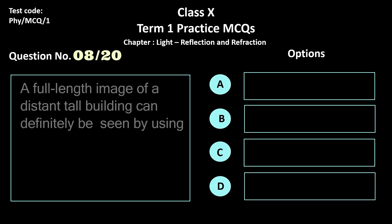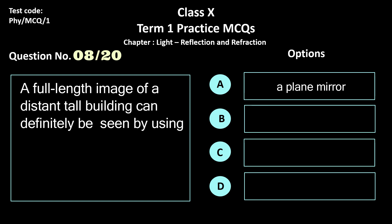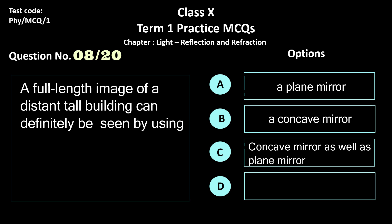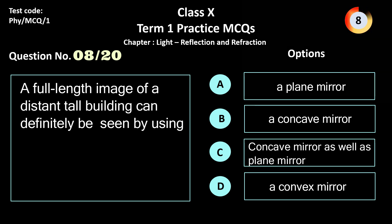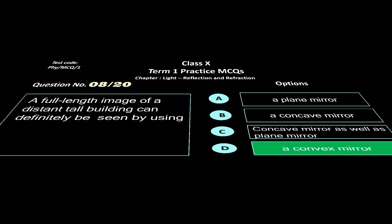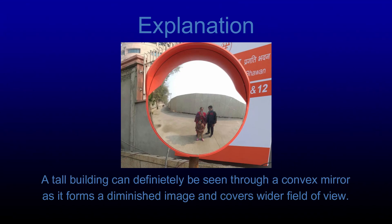Question 8. A full-length image of a distant tall building can definitely be seen by using — options: a) plane mirror, b) concave mirror, c) concave mirror as well as plane mirror, and d) convex mirror. The correct answer is option d, convex mirror. The image formed by a convex mirror is diminished and covers a wider field of view, so a tall building can definitely be seen using a convex mirror.